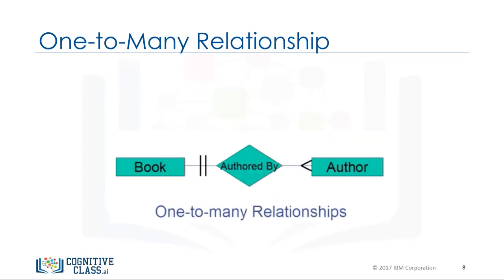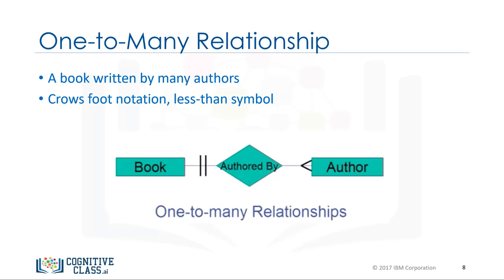Earlier, we saw that more than one author can write a book. This can be represented with a different notation called crow's foot notation — in this case, a less than symbol. This indicates that one book entity is participating in more than one relationship in the relationship set. This is called a one-to-many relationship.